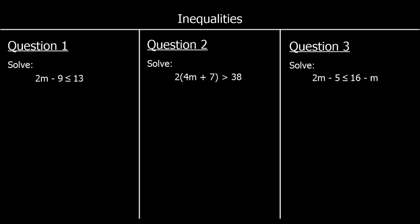Question one: solve 2m − 9 ≤ 13. We want to get m by itself. There's a minus 9, so we add 9 to both sides, giving 2m ≤ 22. Then dividing both sides by 2 gives m ≤ 11.